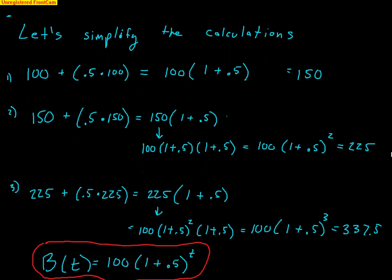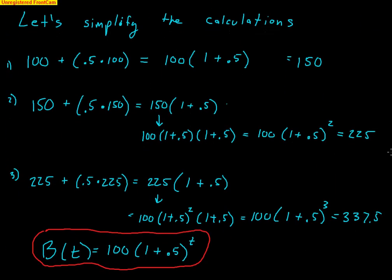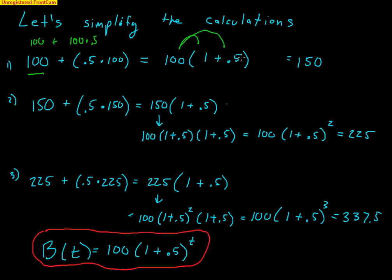Let's simplify some of those calculations, because we want to turn it into a formula. In the first year, we took 100 stores and added 50% of 100. I have two terms: 100 plus 100 times 0.5. If I factor out 100, I get 100 times (1 plus 0.5). Distributing that 100 gives 100 plus 100 times 0.5 — exactly what I did — and that equals 150.